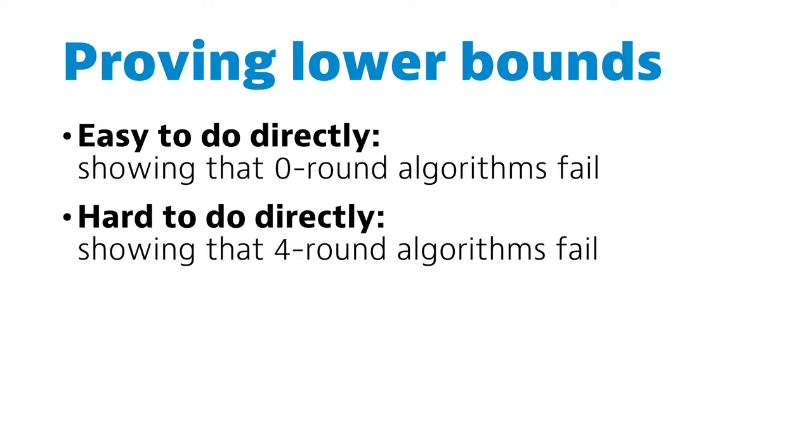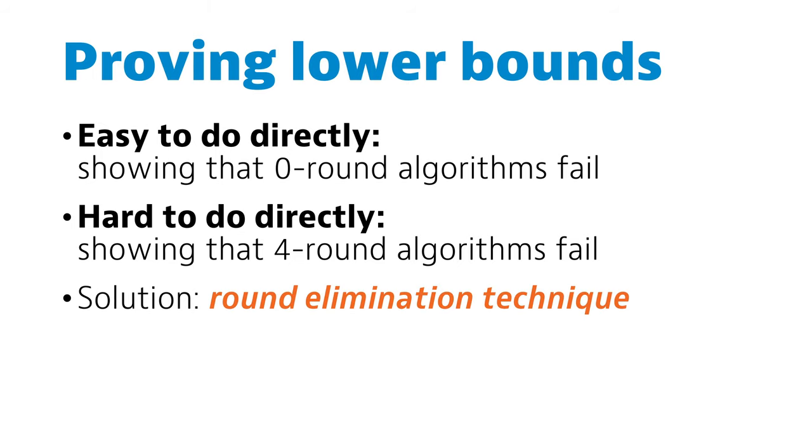But how do we connect these two? We would like to prove that 4-round algorithms will fail. We can easily prove that 0-round algorithms will fail. We will apply here a technique called round elimination.